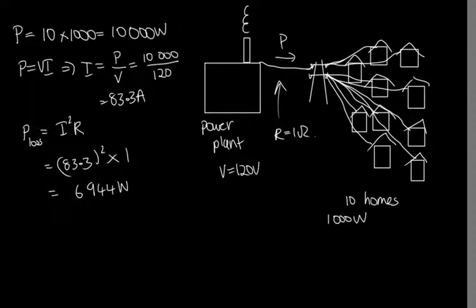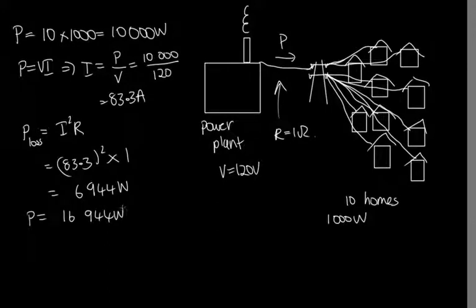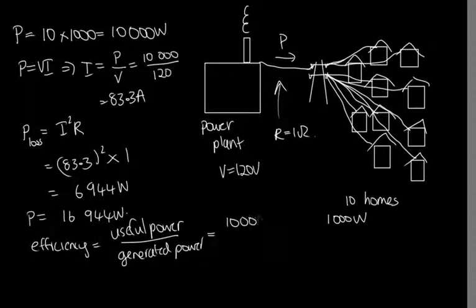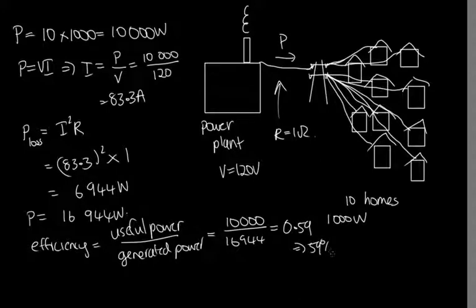Rather than generating just 10,000 watts, the power station will have to output 16,944 watts. The efficiency is the useful power over the generated power: 10,000 over 16,944, which gives us 59%. So we've got 59% efficiency.